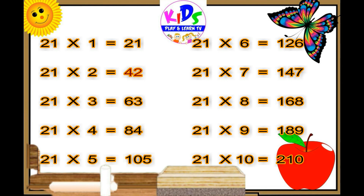21 sevens are 147, 21 eights are 168, 21 nines are 189, 21 tens are 210.